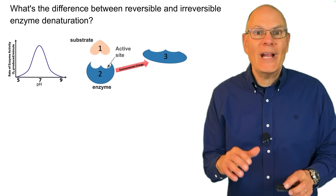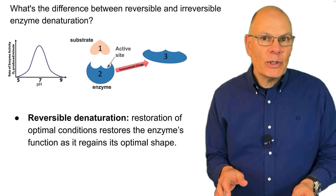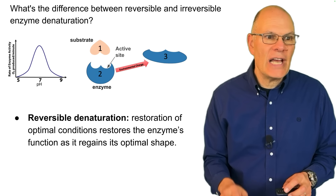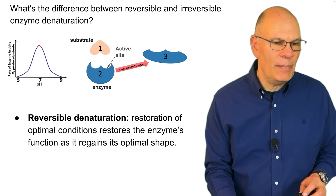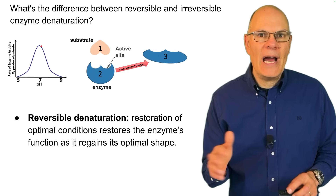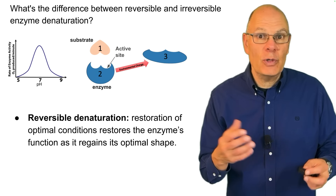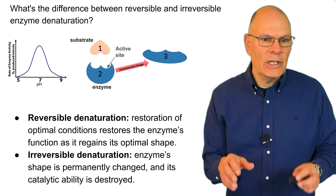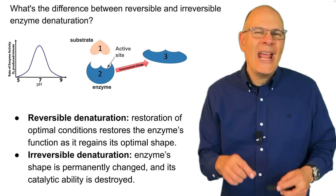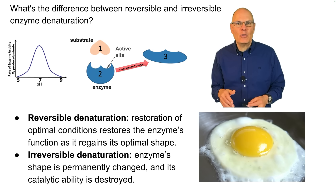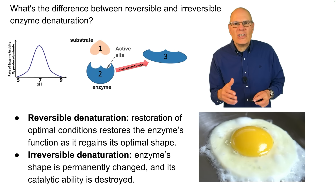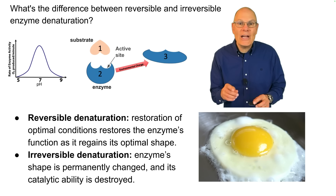What's the difference between reversible and irreversible enzyme denaturation? Reversible denaturation is where the restoration of optimal conditions restores the enzyme's function as it regains its optimal shape. For example, if you move the pH a little bit, the enzyme starts to denature, but if you restore the pH, the enzyme shape might go back to its previous form. But irreversible denaturation is where the enzyme shape is permanently changed and its catalytic ability is destroyed — like what happens when you cook an egg: it'll never go back.